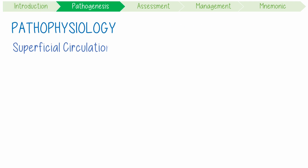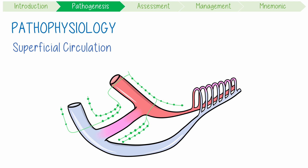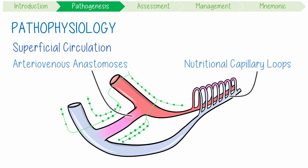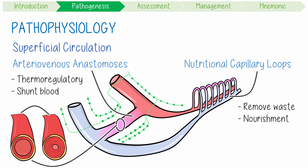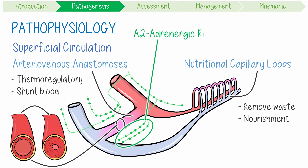Our skin's superficial circulation has two main branches: nutritional capillary loops and arteriovenous anastomoses, or AVAs. Capillary loops function to remove waste and provide nourishment to the cells. Meanwhile, AVAs act as the major thermoregulatory vessels in the skin. When it's really cold, AVAs more strongly vasoconstrict, shunting blood from superficial to deep. Our vasoconstrictor reflexes have a greater impact on these AVAs because they are richly innervated by the sympathetic nervous system.